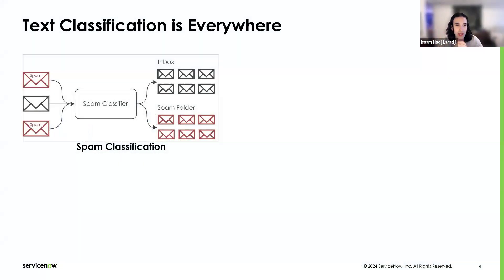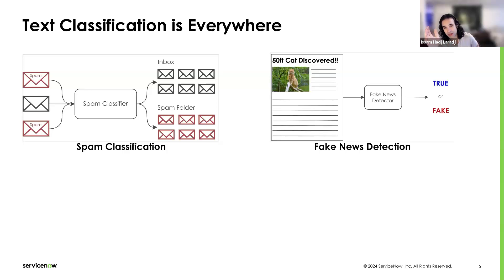Text classification is everywhere, and one of the earliest applications is spam classification — a very useful application where emails that are highly irrelevant or contain harmful content or links to viruses are put into a spam folder to reduce risk for the user. Another application is fake news detection, which is now more important than ever, especially since it's very easy to generate content that looks real but is actually fake, so having a model that can detect fake articles can be very useful.